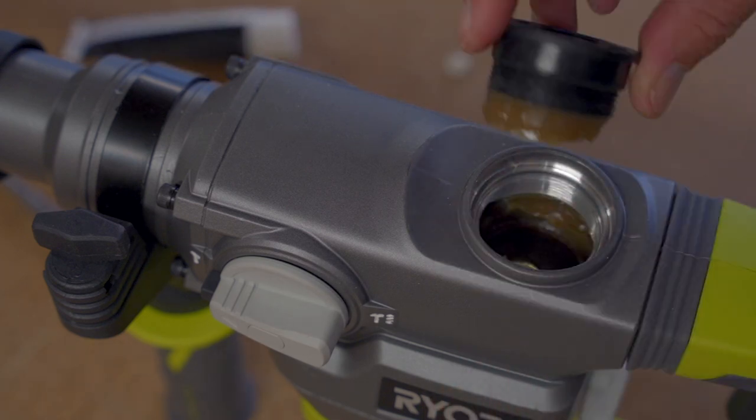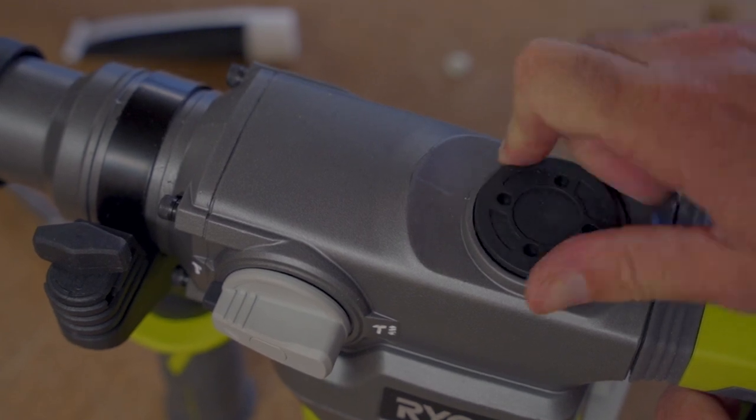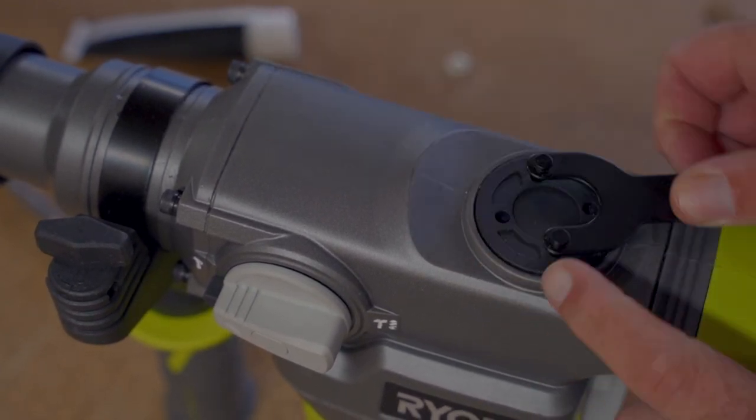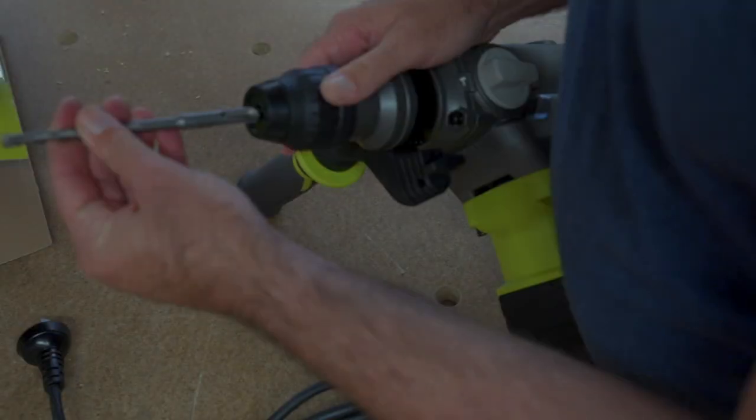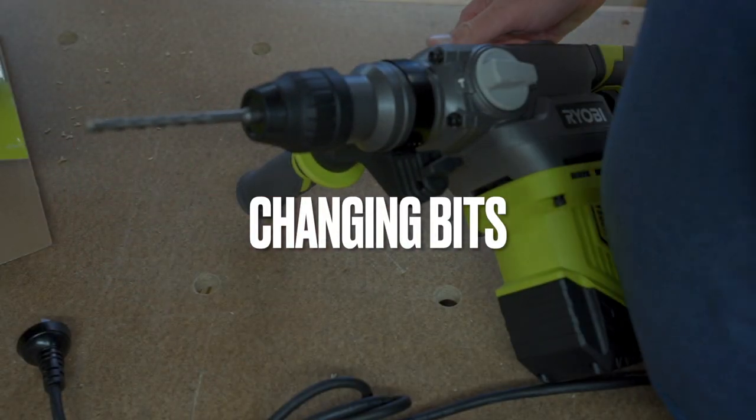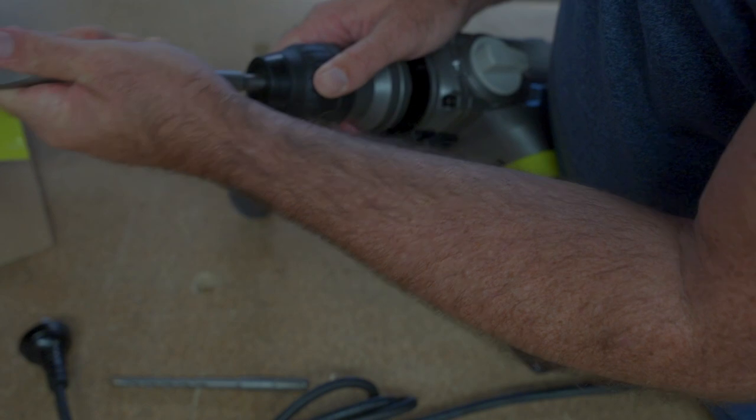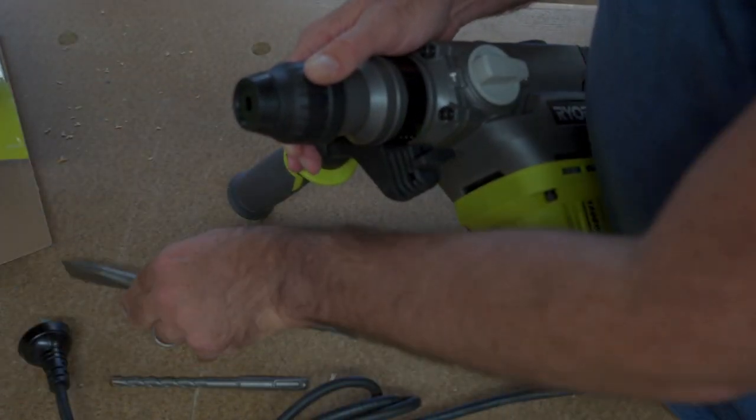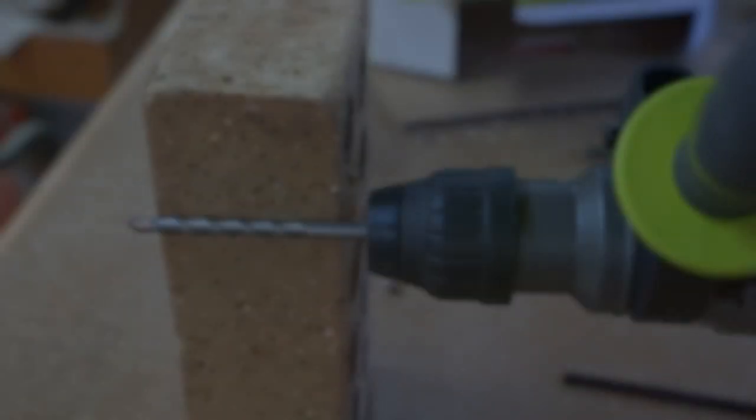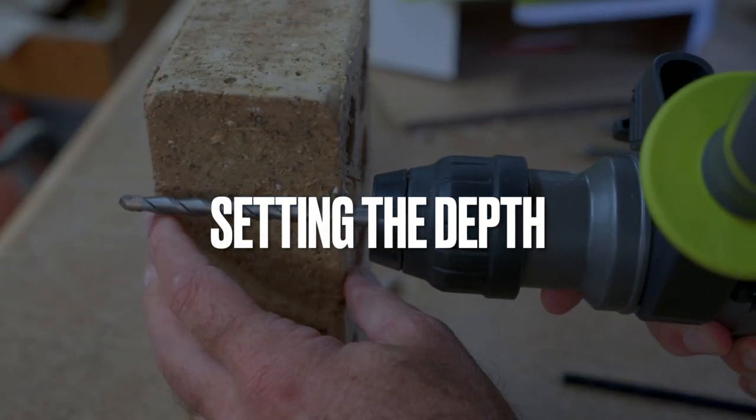Changing bits on the tool is really easy. All you do is pull back the collar, slide the bit in, and then release the collar and the bit is in place. To remove the bit, slide back the collar and just reverse the process.